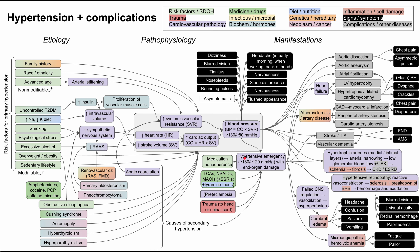One last note: hypertensive urgency is when blood pressure meets that elevated threshold — above 180/120 — without end-organ damage. If none of the organ damage symptoms are present, that may be hypertensive urgency rather than emergency. This has been a comprehensive flowchart on hypertension and its complications. I hope this was helpful — thank you for listening.